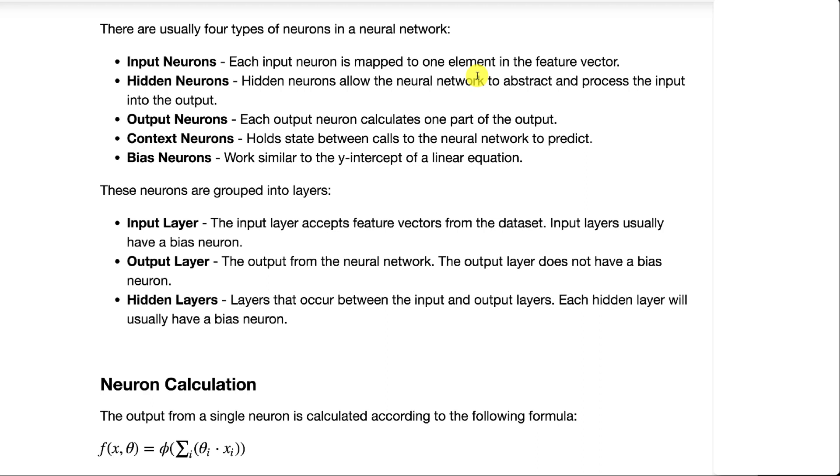You also have several layer types that these neurons go into. There's the input layer that receives the input, the output layer that sends the output from the neural network, and then the hidden layers between that.